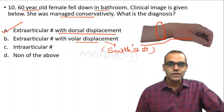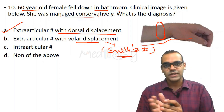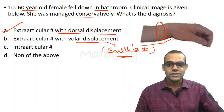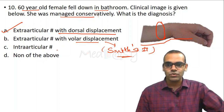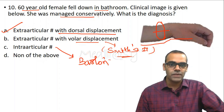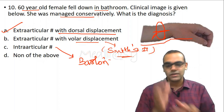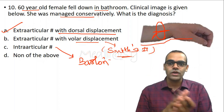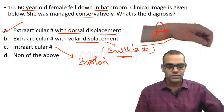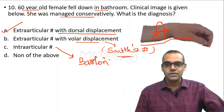The opposite of Colles' is Smith's fracture — an extra-articular fracture with volar displacement. The intra-articular fracture of the distal radius is the Barton fracture — a fracture in the coronal plane where a volar or dorsal chip is fractured.